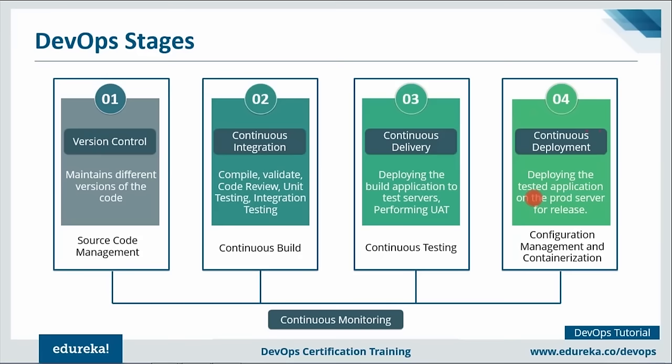Continuous deployment means deploying the tested application onto production servers for release. Configuration management and containerization tools are used here to provision the infrastructure. However, continuous deployment is not a good practice because there may be multiple checks and additional testing you want to do before releasing your product in the market. Once live, the application is continuously monitored by tools like Nagios or Splunk, which provide relevant feedback to the concerned teams.